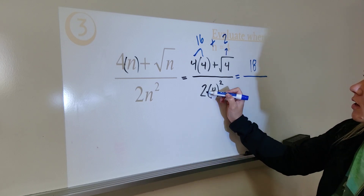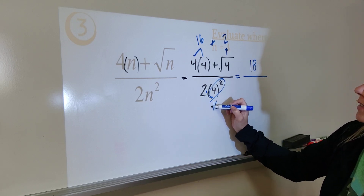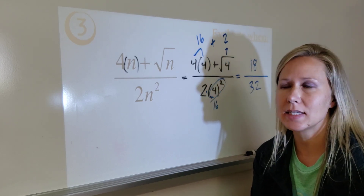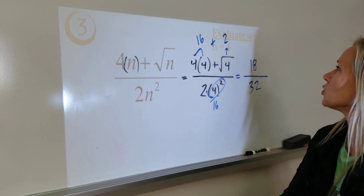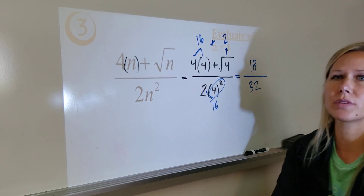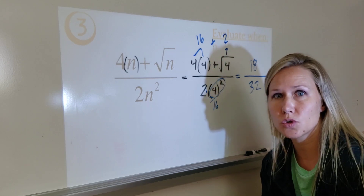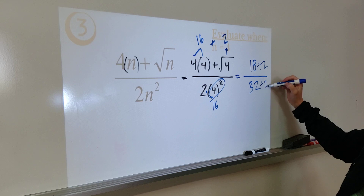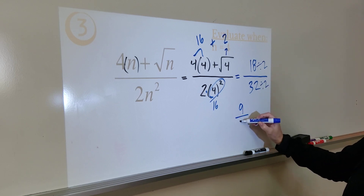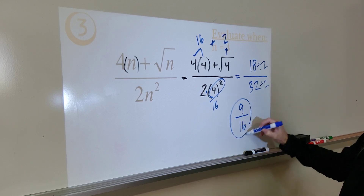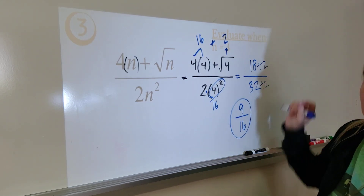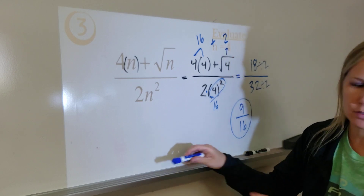And then down here in the denominator: exponent first, 16 times 2, I get 32. Notice that 18 and 32 are both divisible by two, so I divide top and bottom by two and get 9 over 16. That would be my final answer. Always simplify your final answer — we always leave our answers in simplest form.